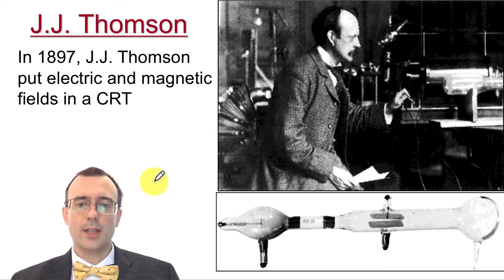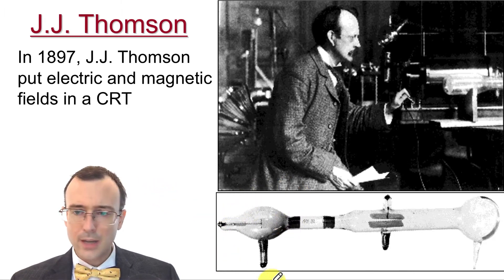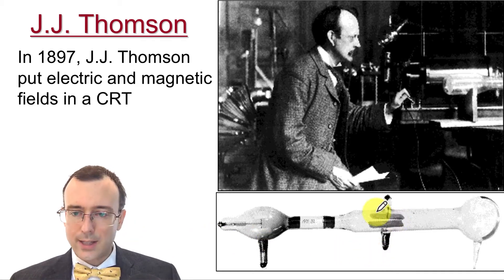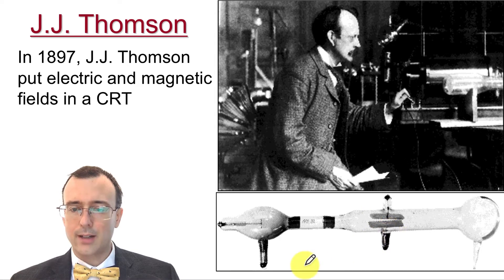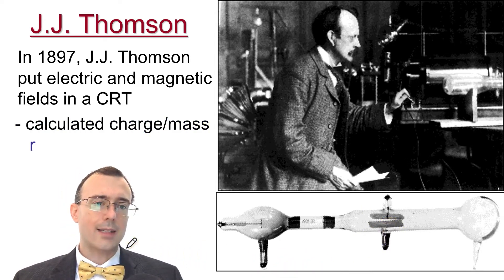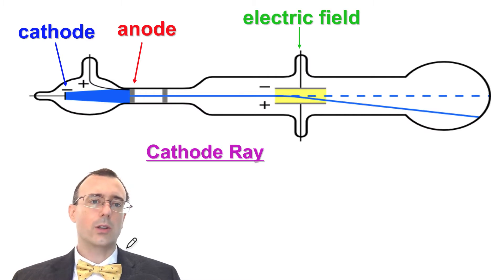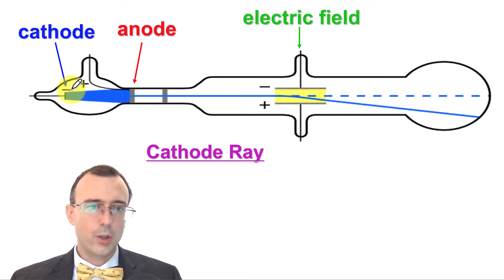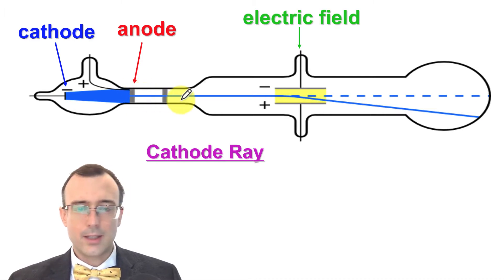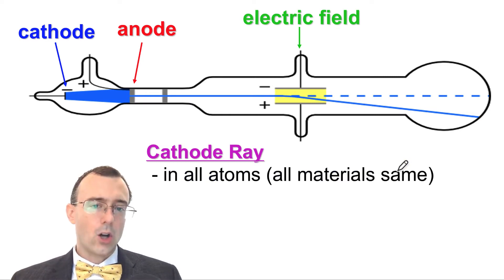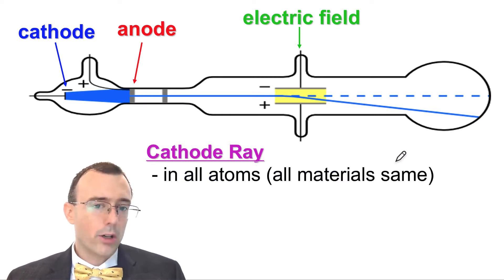J.J. Thomson also came on the scene and did more experiments with cathode ray tubes. He put electric and magnetic fields into the cathode ray tube using electric plates, and used that to calculate the charge-to-mass ratio of the cathode ray. He concluded, first of all, that all atoms contain these particles of the cathode ray.